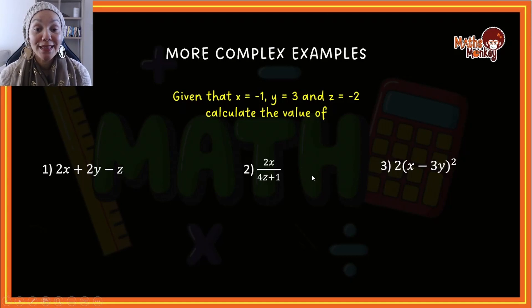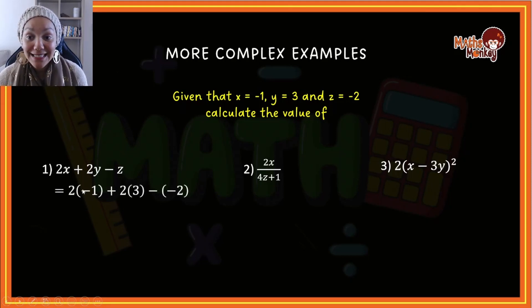In this case now we have three variables given to us: x equals negative 1, y equals 3, and z equals negative 2. They want us to calculate the value of these three. In number 1, wherever I see an x I'm going to put negative 1, where I see a y I'm going to put 3, and where I have z, remember this minus is that minus, but z is negative 2. So this is what the question is going to look like.